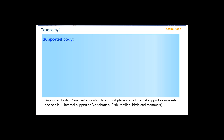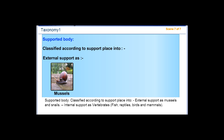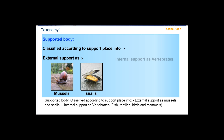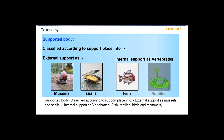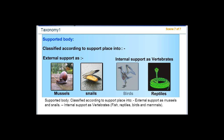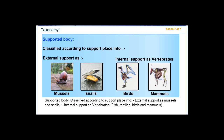Supported body: Classified according to support place into external support, as mussels and snails, and internal support as vertebrates — fish, reptiles, birds, and mammals.